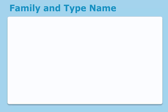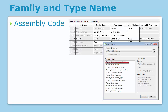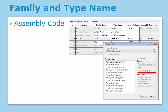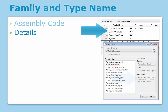First, we're going to take a look at the predefined links primarily meant for editing family and type names. The assembly code link can be used to assign the assembly code parameter to align with your specifications or construction standards. This particular link is a multi-category link, which means that information can also be gathered from system families — the elements shown grayed out — as well as 2D content. The details link may be used to rename the family and type name for custom detail components. 2D detail components can often bring unwanted clutter to a project browser as detail families are imported from various outside sources. These can easily be renamed and reorganized by using the project standards details link.